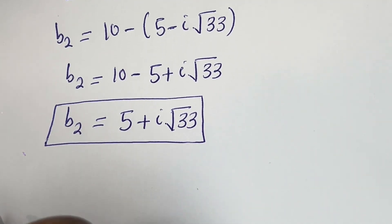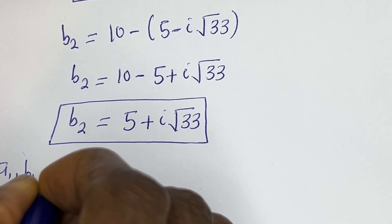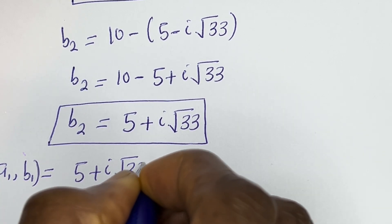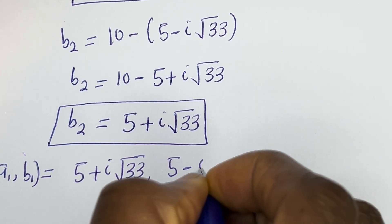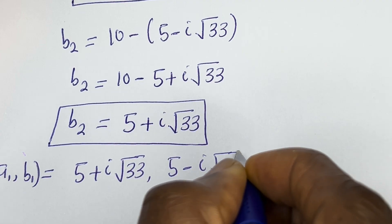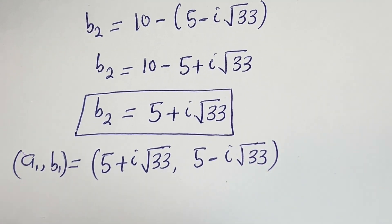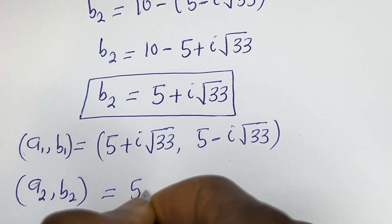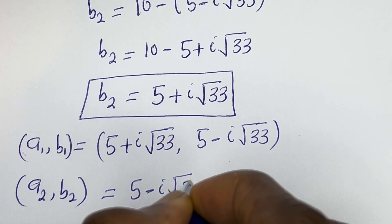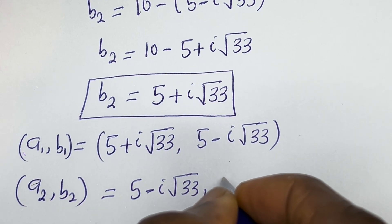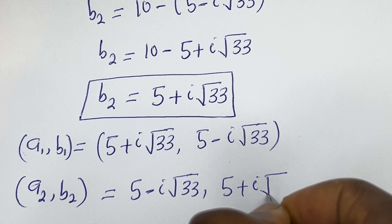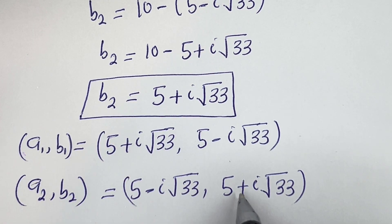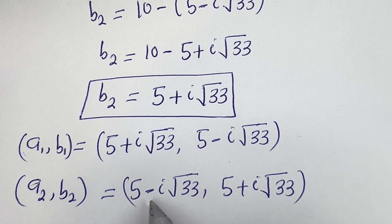Therefore our final answer is: (A1, B1) equals (5 plus i square root of 33, 5 minus i square root of 33), and (A2, B2) equals (5 minus i square root of 33, 5 plus i square root of 33). Note that the value of A1 equals the value of B2, and the value of B1 equals the value of A2.